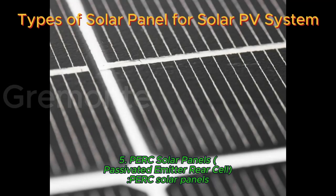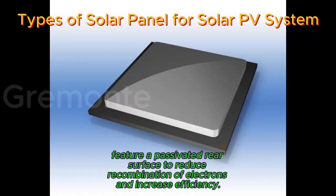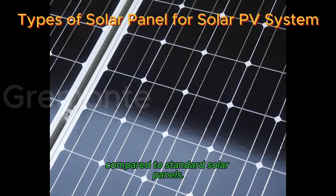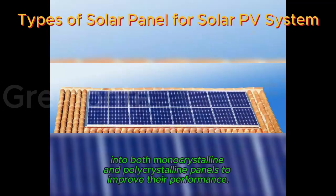5. PERC solar panels — Passivated Emitter and Rear Cell. PERC solar panels feature a passivated rear surface to reduce recombination of electrons and increase efficiency. They offer higher efficiency and better performance in low-light conditions compared to standard solar panels. PERC technology is often incorporated into both monocrystalline and polycrystalline panels to improve their performance.